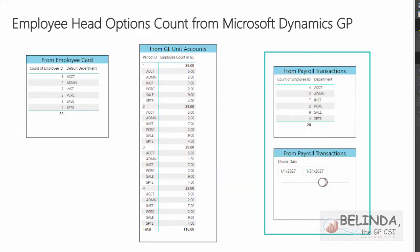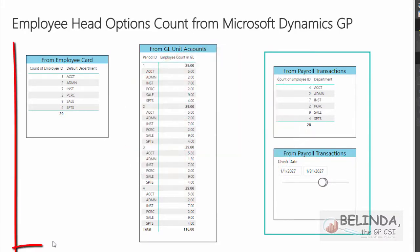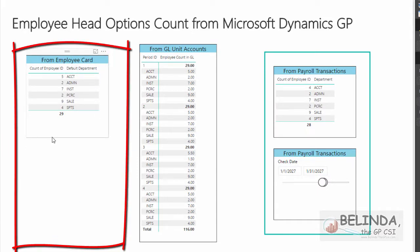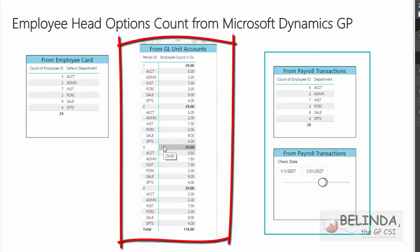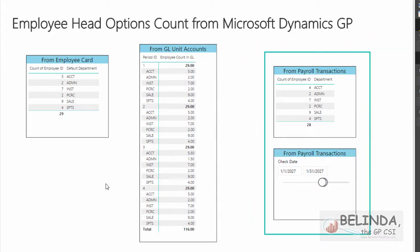I'm going to show examples from Dynamics GP, but this could apply to anything. If payroll employee count doesn't apply to you, think about it as customers, prospects, leads, or whatever you want to count in your organization. There are three different ways you could obtain headcount in Power BI from the GP database: from the employee card itself, from unit accounts in the general ledger, or from payroll transactions or checks.